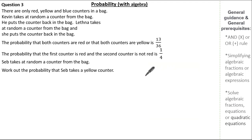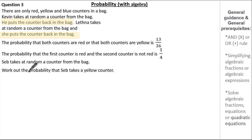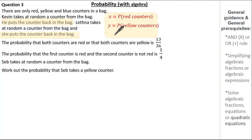Hopefully reading the question you've identified that we have independent events, because Kevin puts the counter back and Lethener puts the counter back — so writing probabilities is a little easier. Also, the question wants you to calculate a probability, so when forming expressions write them in terms of probability. I've written x to be the probability of red, y to be the probability of yellow, and z to be the probability of blue.